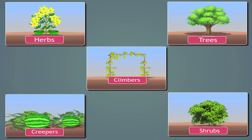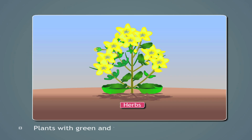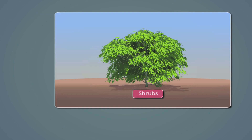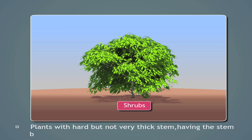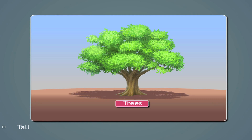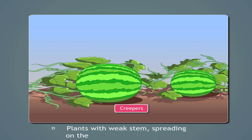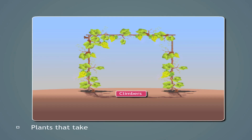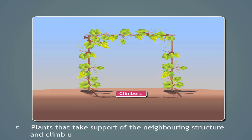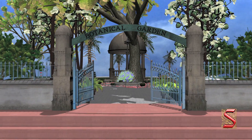Let's have a quick glance on all of these plants. You have now reached the end of this module. In this module you learned that plants with green and tender stems are called herbs. Plants with hard but not very thick stem having the stem branching out near the base are called shrubs. Tall plants with hard and thick brown stem are known as trees. Plants with weak stem spreading on the ground are known as creepers. Plants that take support of the neighboring structure and climb up are called climbers. I hope you enjoyed this module. Thank you.